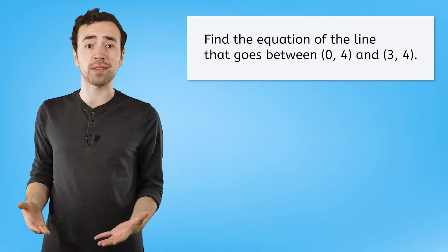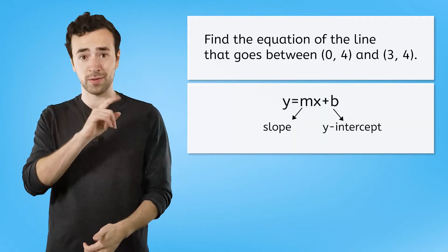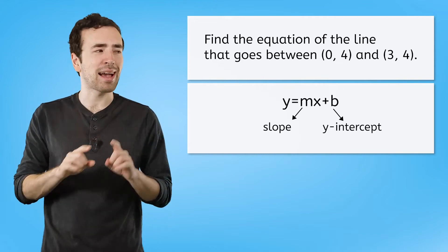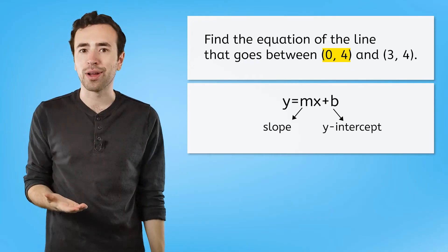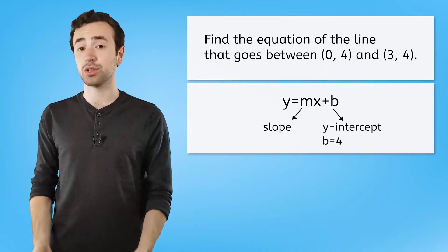We know that usually to write the equation of a line in slope-intercept form, you need the slope and the y-intercept. Did you notice that I did something sneaky? I actually gave you the y-intercept. It's right there, 0 comma 4. So we know that b is 4. All that's left is to find the slope.